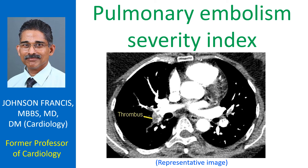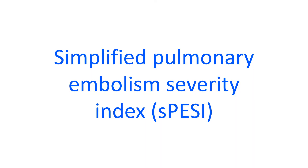Simplified Pulmonary Embolism Severity Index is known in short as S-PESI. The original PESI score was more complex. In the Simplified Pulmonary Embolism Severity Index, one point each is given for the following criteria.